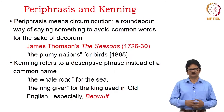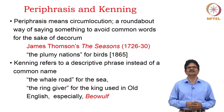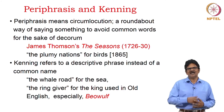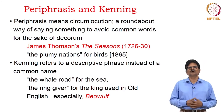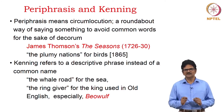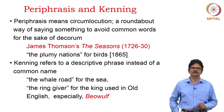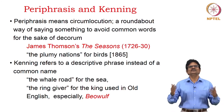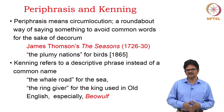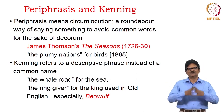Periphrasis and kenning are two more figures of thought. Periphrasis means circumlocution — a roundabout way of saying something to avoid common words for the sake of decorum. In James Thomson's poem 'The Seasons,' he says 'the plumy nations' for birds. In those days, the word 'birds' was not to be used in great poetry, so he uses 'the plumy nations.' That is periphrasis. Kenning refers to a descriptive phrase instead of a common name — this was very popular in Old English and Middle English literature. 'The whale road' for the sea, 'the ring-giver' for the king — used in Old English, particularly in Beowulf.